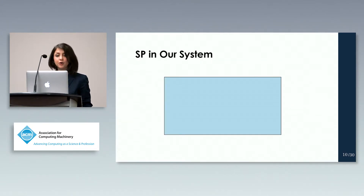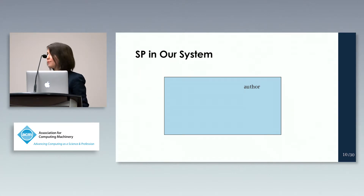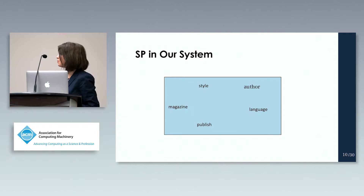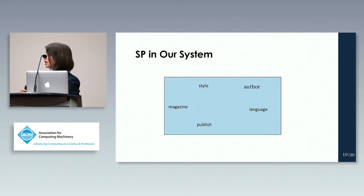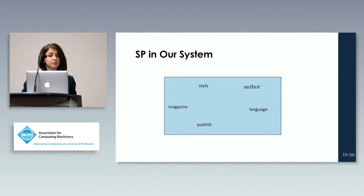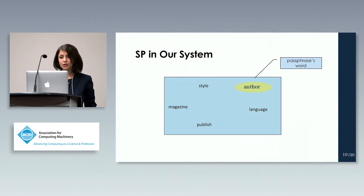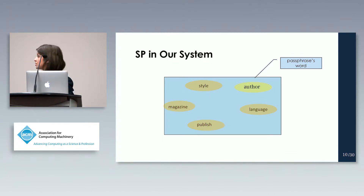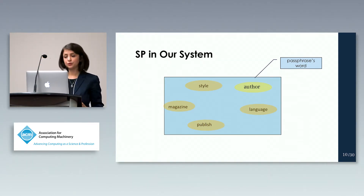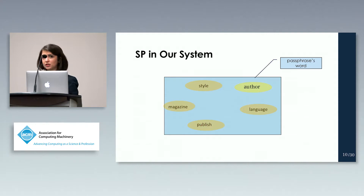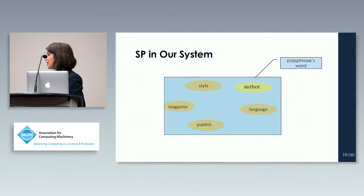So how do we use semantic priming in our approach? Having displays containing the user's passphrase word, we surround the passphrase word with semantically related words. On each display, there is a semantic relation between the words. For the purpose of demonstration there are fewer words shown, but in the actual experiment I'll explain how many words appear on each display.